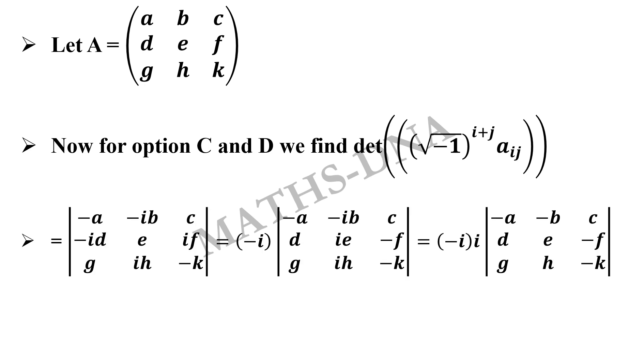Then we will get a matrix whose determinant can be found as minus A, minus IB, C, minus ID, E, IF, G, IH and minus K.